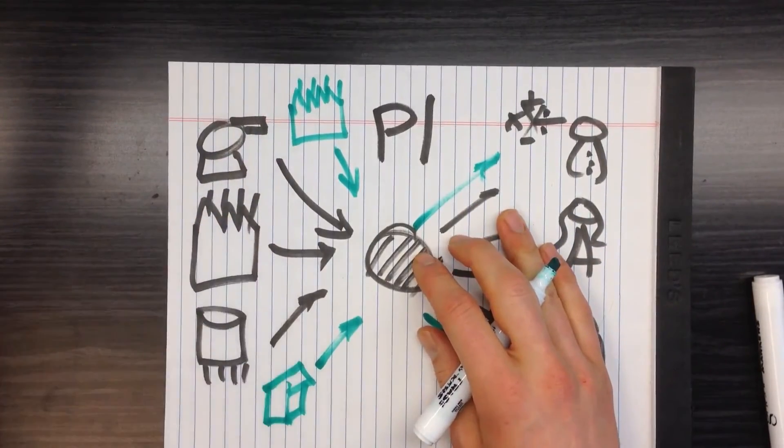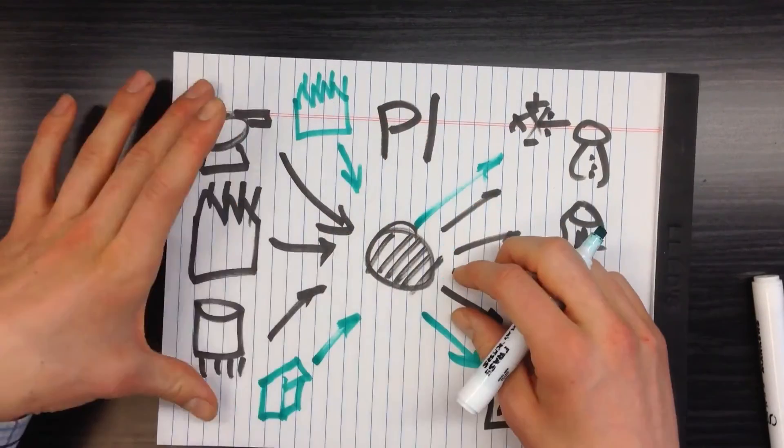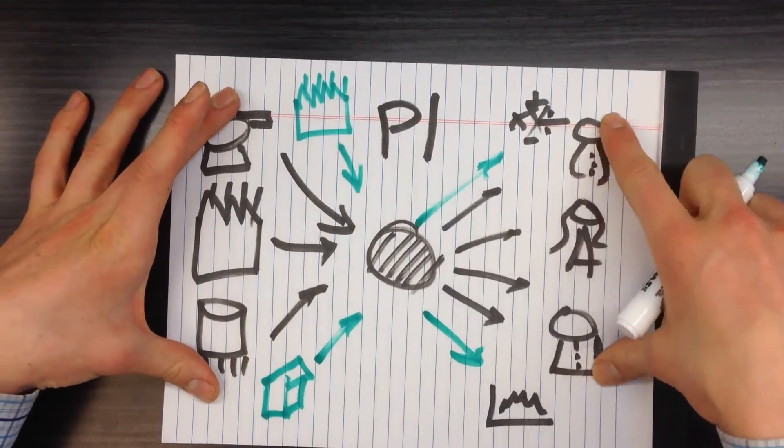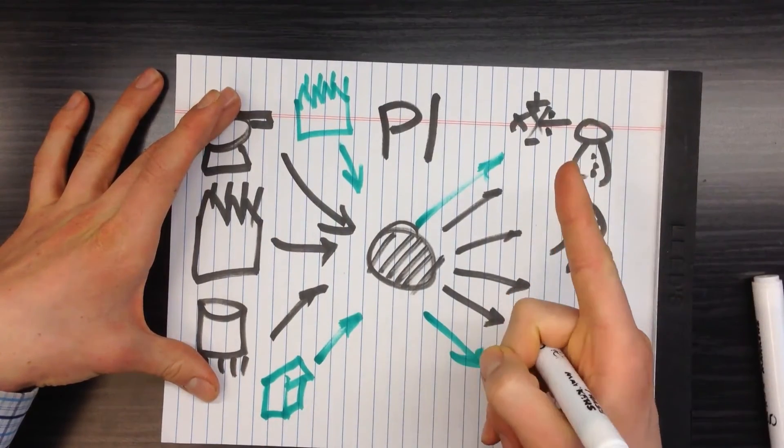Instead of custom solutions and silos and different vendors, wherever your data begins, and get it to wherever your data needs to go. So that's PI as an infrastructure.